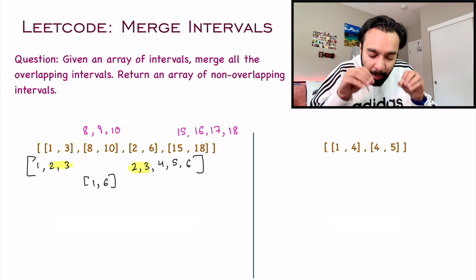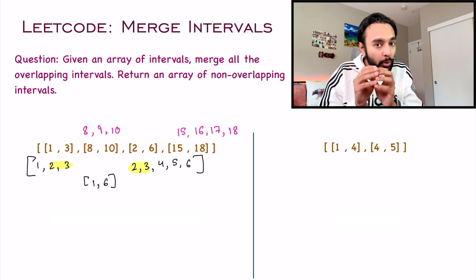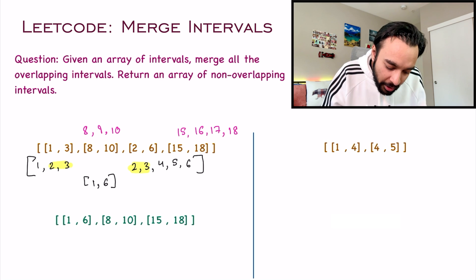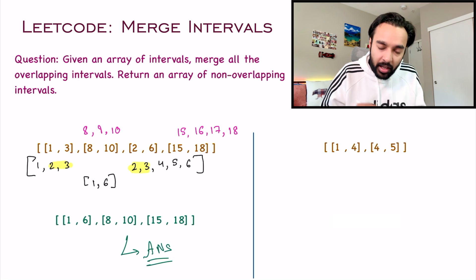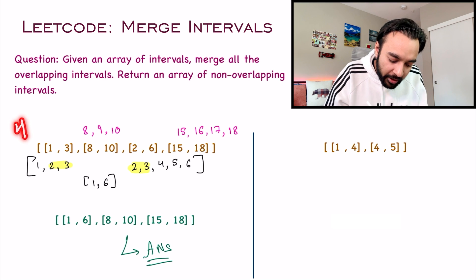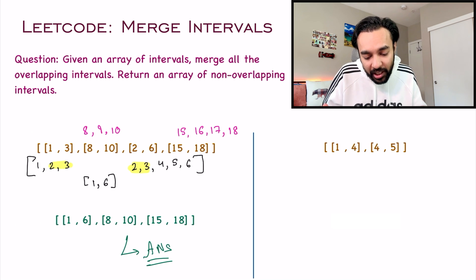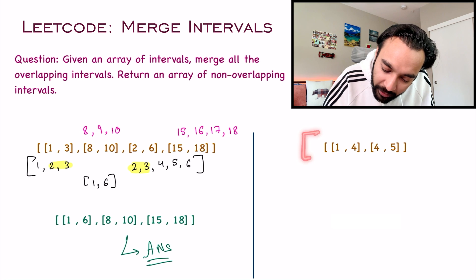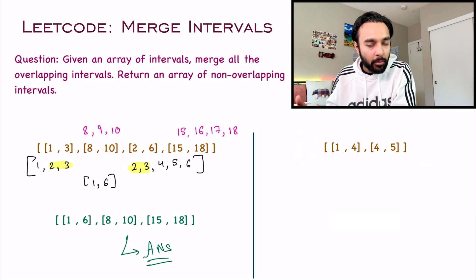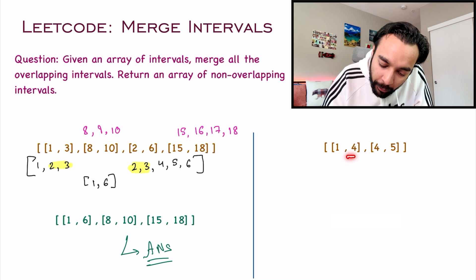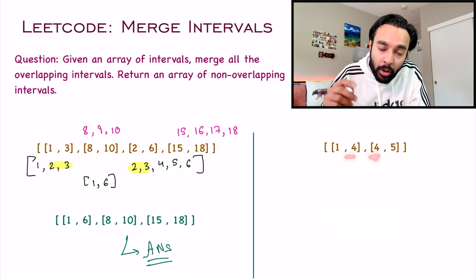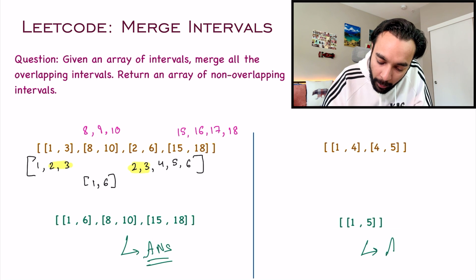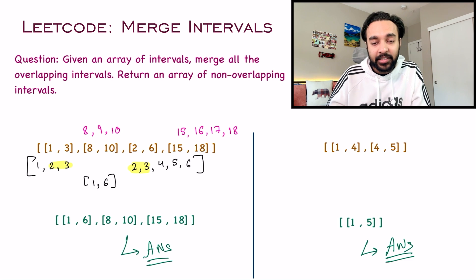So this is the best possible scenario in which you can have non-overlapping intervals. For the first test case, your answer will look something like this — I have merged four intervals into just three. Similarly, in our second test case, I have two intervals: 1,4 and 4,5. The element 4 is common in both of them, so I will merge them and create one interval that will be 1,5, and that will be your answer.